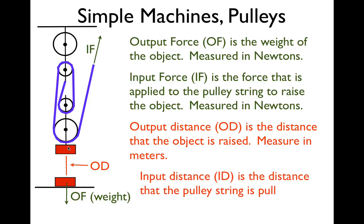Then we have the input distance. The input distance is the distance that you actually move the string. When you pull the string, you pull it up in this case, and you pull it that far. The distance that you pulled — that's the input distance. The distance should be measured in meters. Sometimes you measure in centimeters, but really they should be measured in the base unit for the metric system, which is the meter.